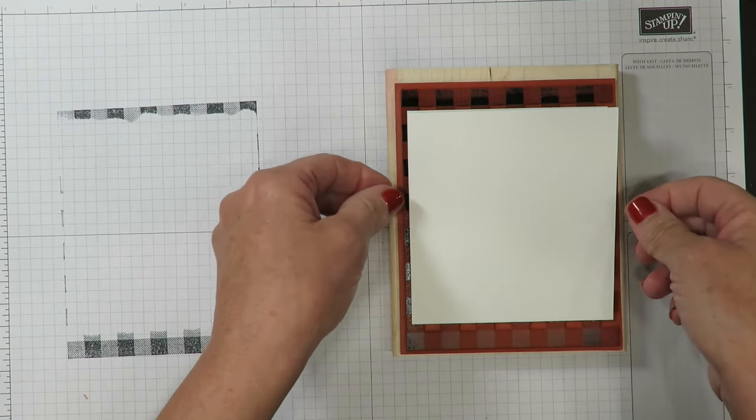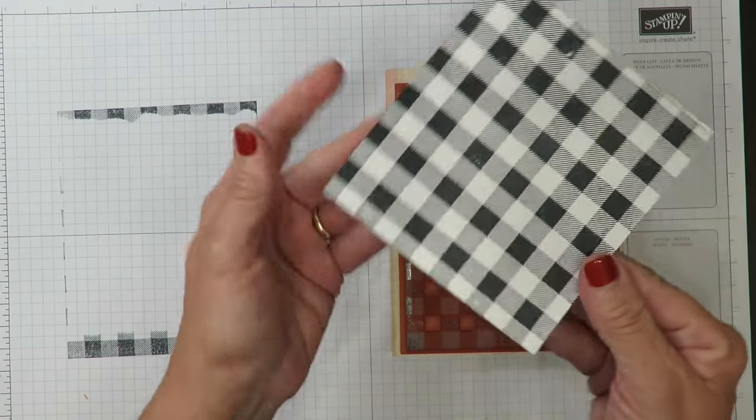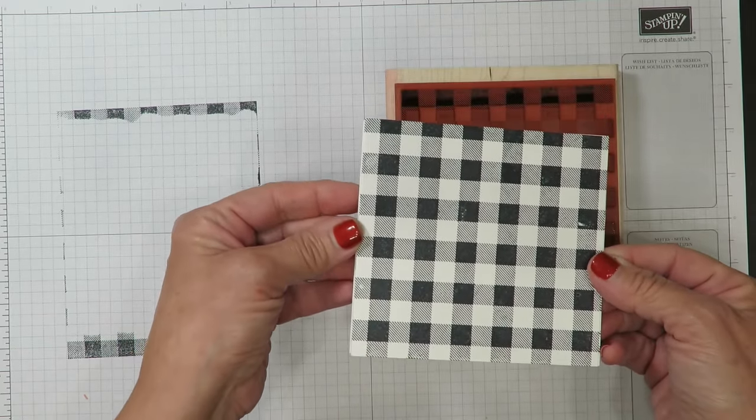Once you're done, go ahead and open it up. And you'll be able to just lift your image. And there you will have your buffalo check background.